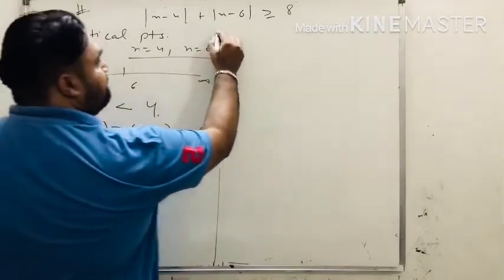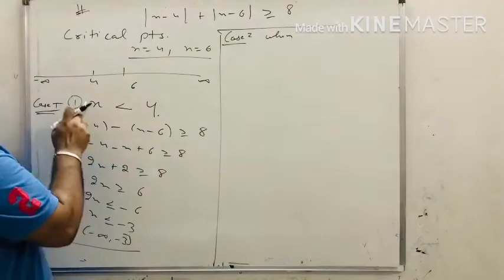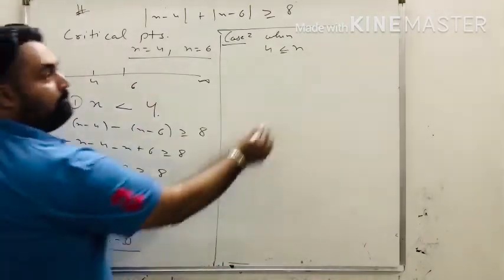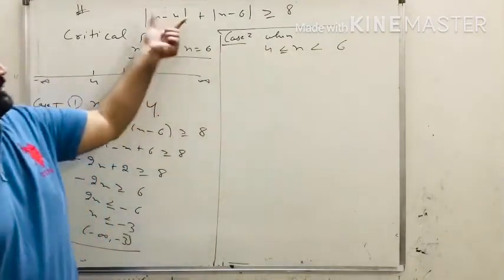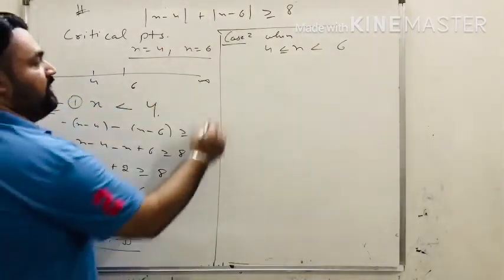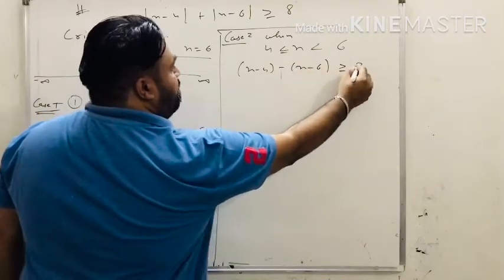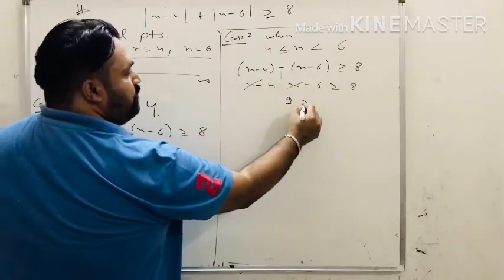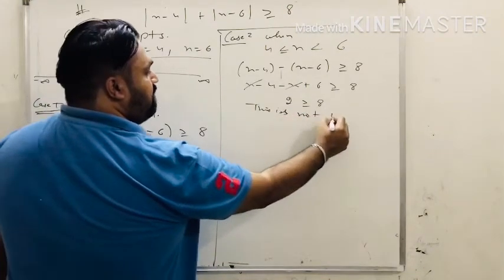Case 2: x is greater than or equal to 4 but less than 6. Since x is greater than 4, the first modulus is positive; since x is less than 6, the second is negative. We get x minus 4 plus minus x minus 6 greater than or equal to 8. Simplifying: x minus 4 minus x plus 6 greater than or equal to 8. The x terms cancel, leaving 2 greater than or equal to 8. This is not possible.